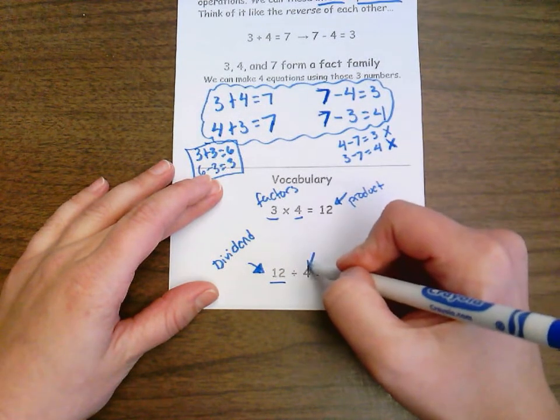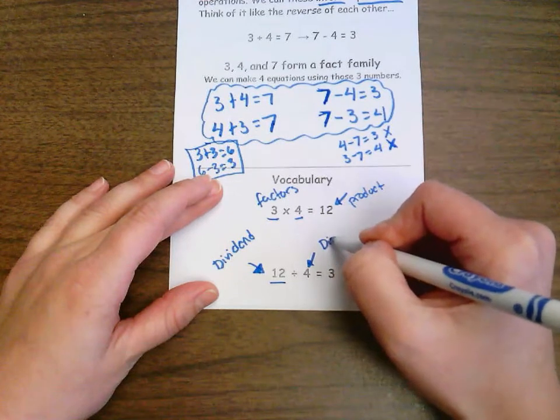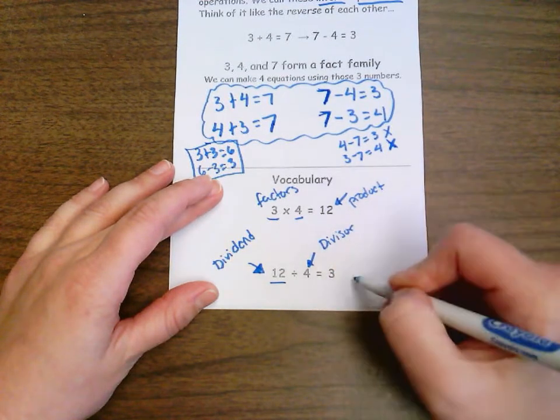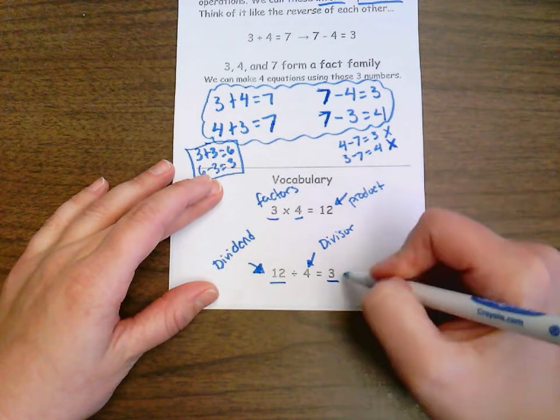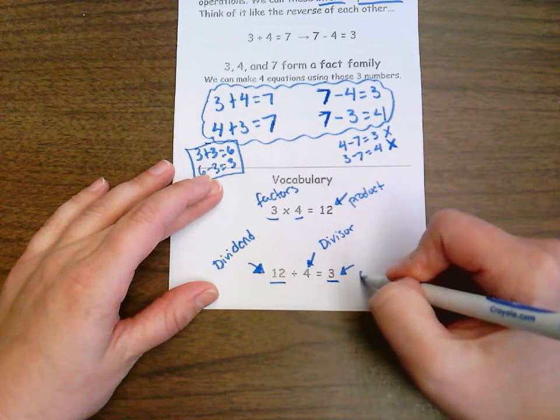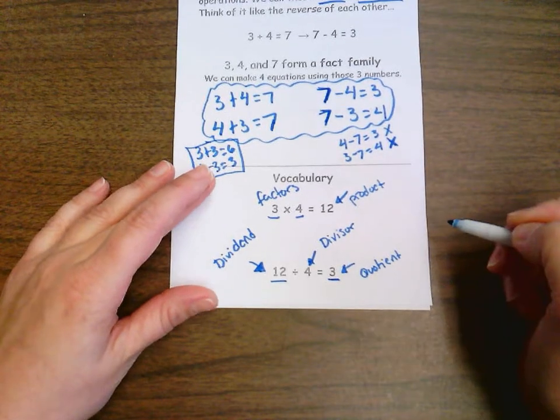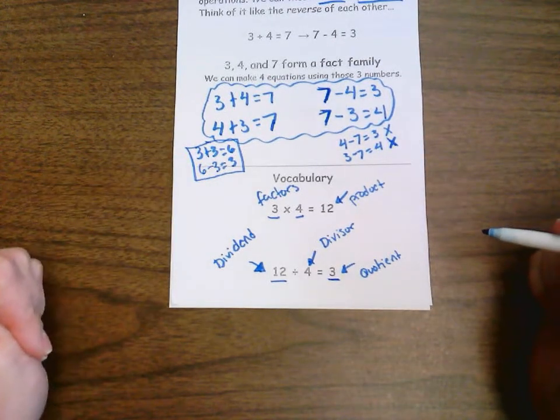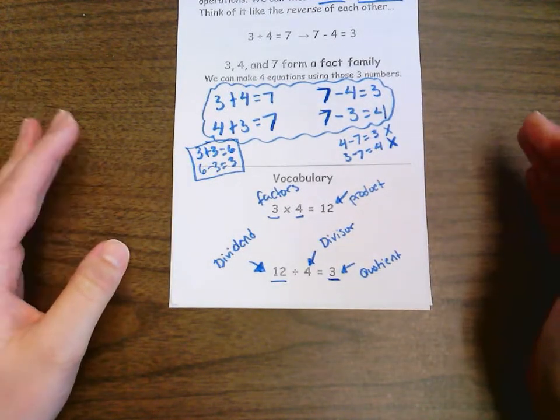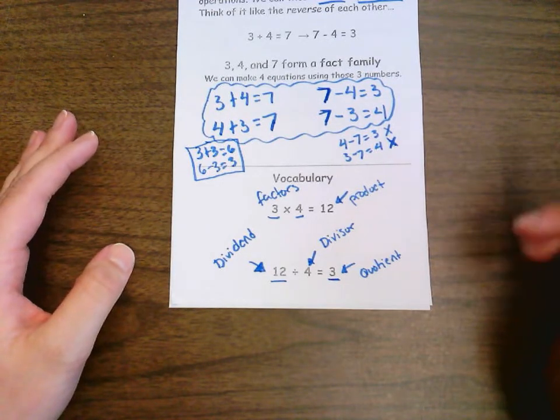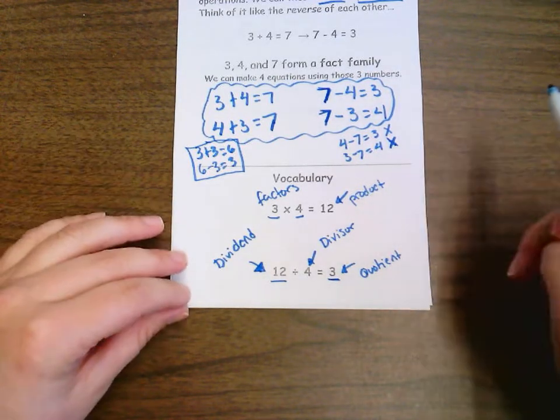And then over here the number we're dividing by is our divisor. And then our answer is no longer called the product. It is now called the quotient. And again, these are more complicated math terms. Luckily we have our word cards and we have our glossary. Whenever we need to look up what they are, we can do that easily enough.